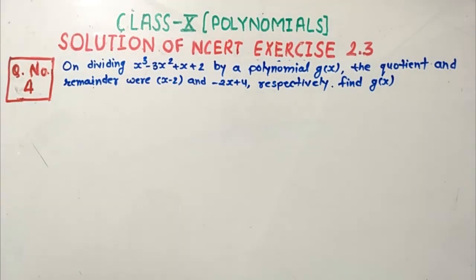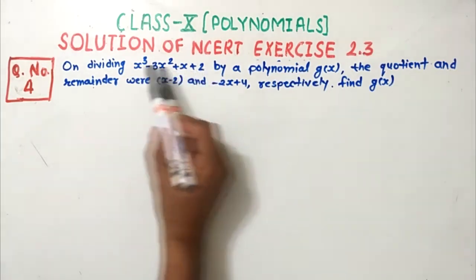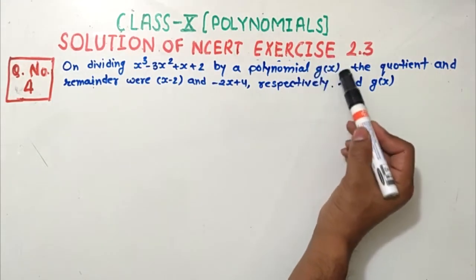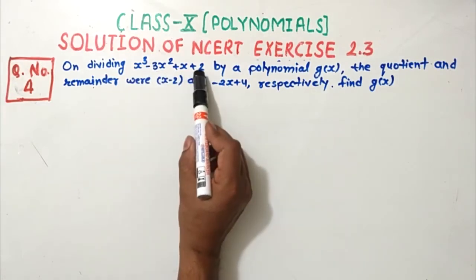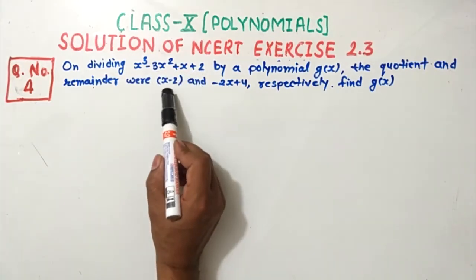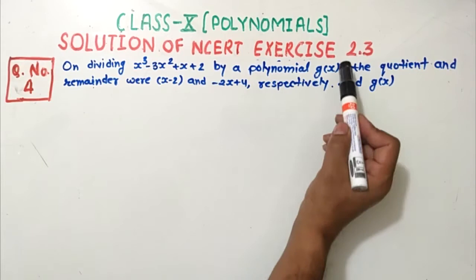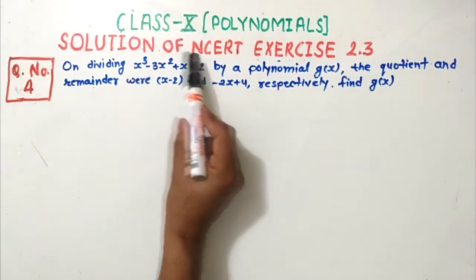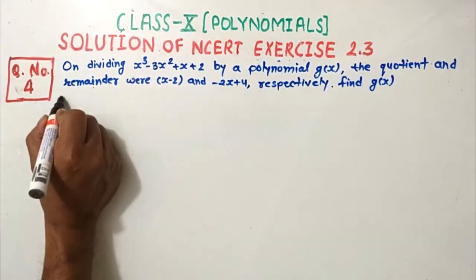So here we have a polynomial given in the question. This polynomial has to be divided by some other polynomial g(x). When we divide this polynomial by g(x), we get the quotient x minus 2 and remainder minus 2x plus 4. We have to find the polynomial by which the given polynomial was divided. Let's solve this question.